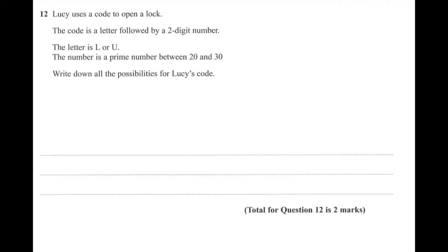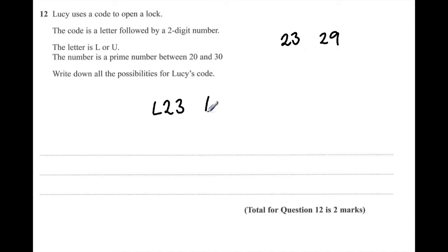Question 12. Lucy uses a code to open a lock. The code is a letter followed by a two-digit number. The letter is L or U. The number is a prime number between 20 and 30. The prime numbers between 20 and 30 are 23 and 29. So all possibilities are: L23, L29, U23, and U29.